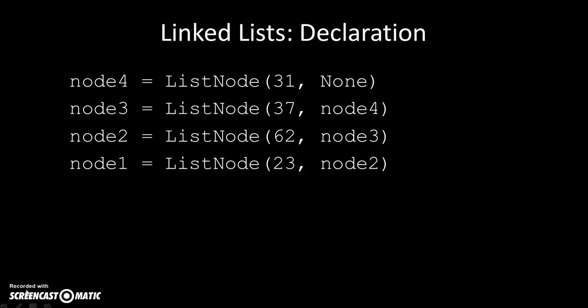If we want to declare a linked list of nodes, we declare them in reverse order, and we'll see why in a second. Node 4 is of list node type, has value 31, and points to None — None being the Python version of null. Node 3 is a list node with value 37 and it points to node 4. We had to declare node 4 first because node 3 points to node 4.